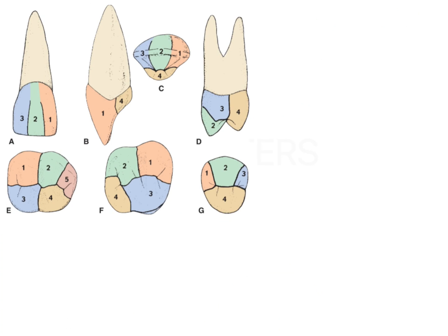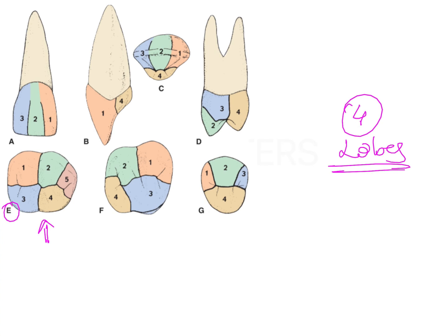The lobes that are present help in the formation of teeth. There is a minimum of four lobes - this is an exam question that has been asked: what is the minimum number of lobes present in a permanent tooth? The answer is four. Teeth such as molars may have five or more lobes from which enamel formation has taken place, but the minimum number is four. In anterior teeth such as incisors, there are four lobes.